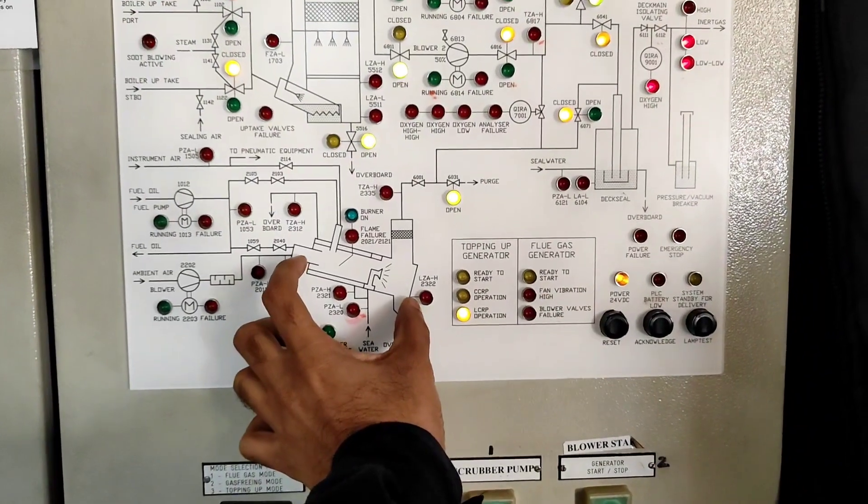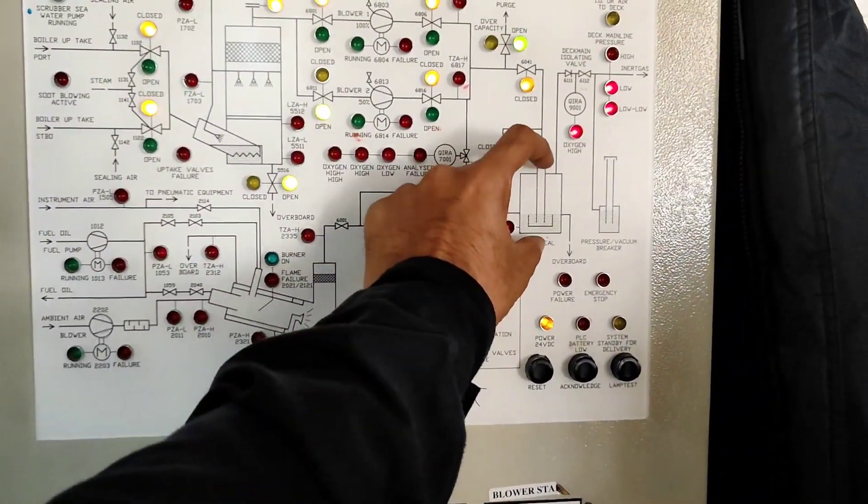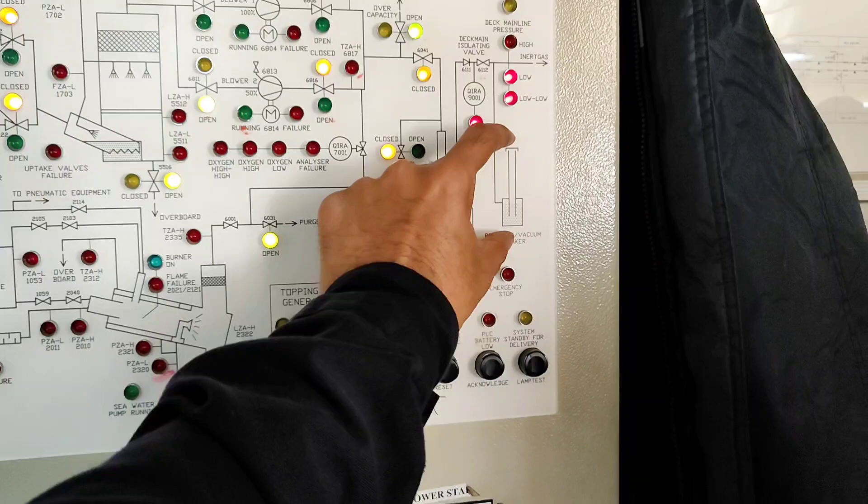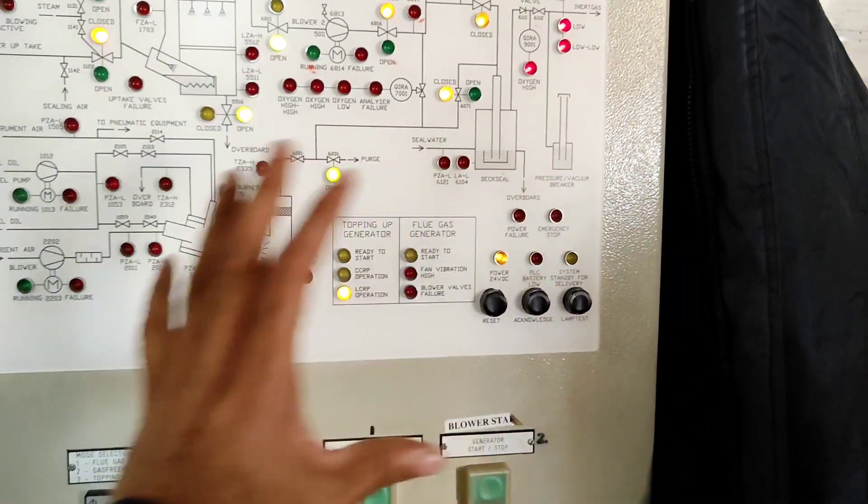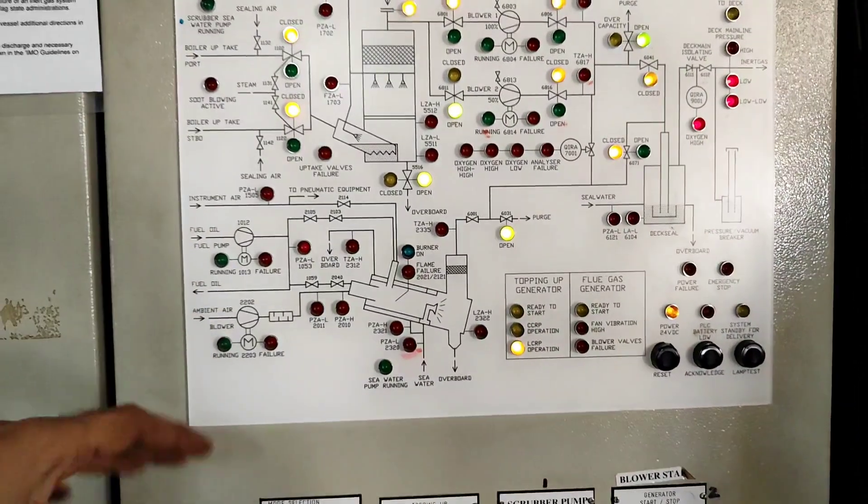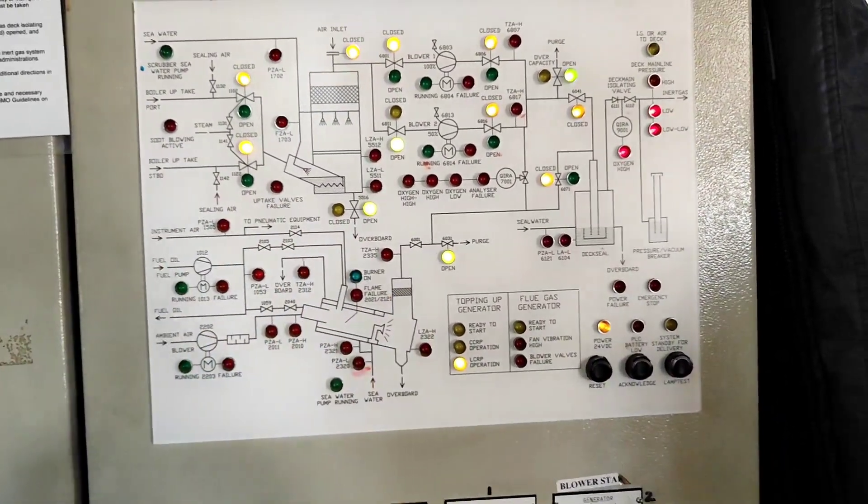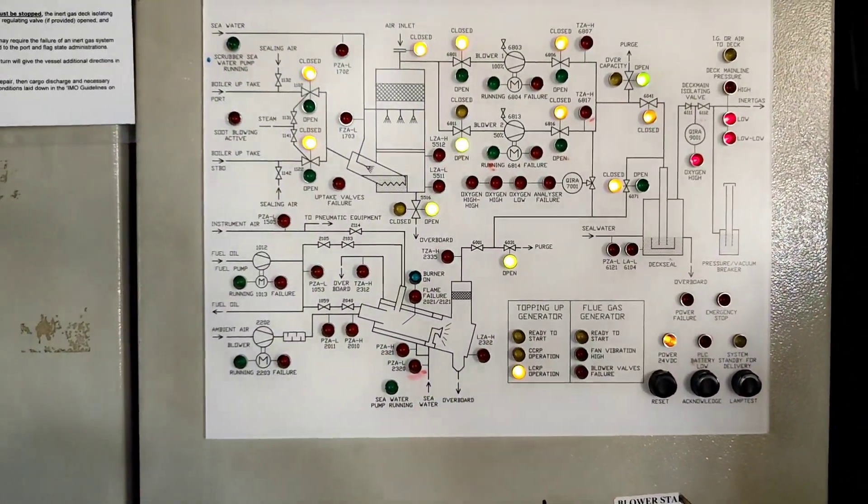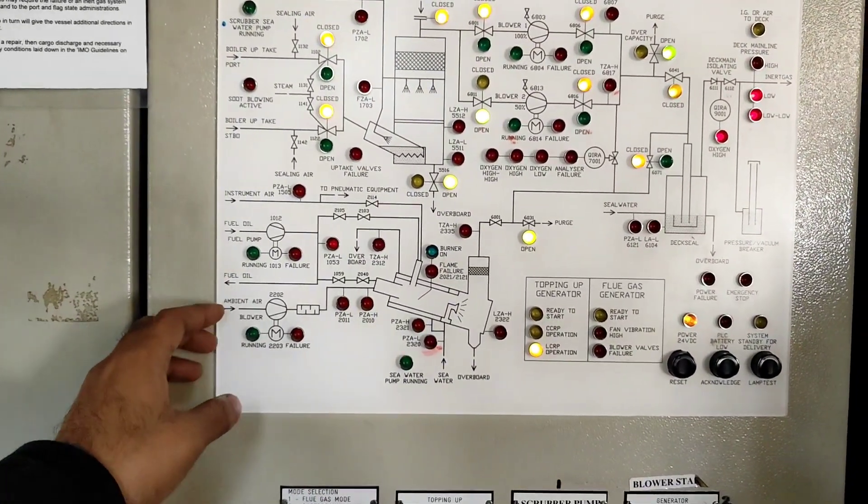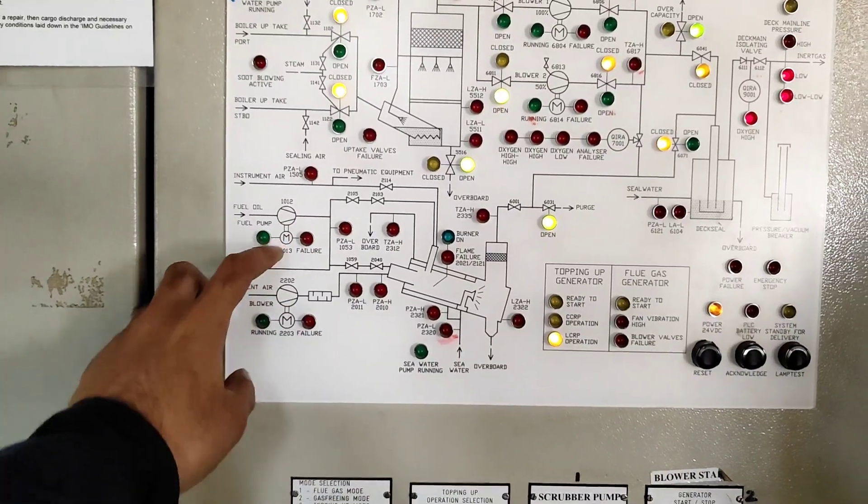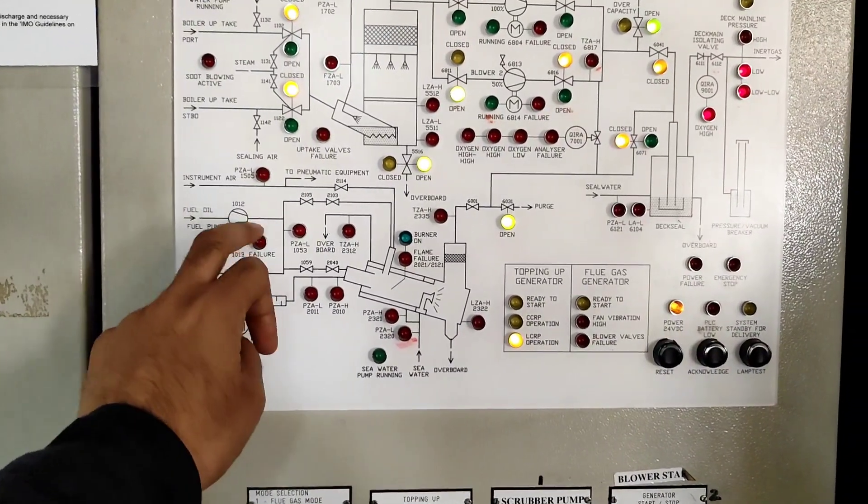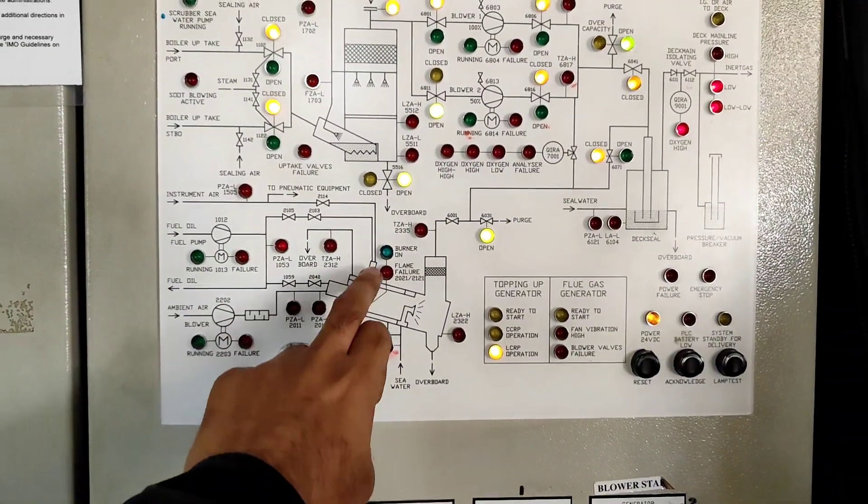So this unit is your scrubber and this is for topping up IGG. This is your deck seal and this is your PV breaker. So one, two, three, four - four important things are there. Other things are also important but I was trying to highlight the main points. These are the fuel oil pumps, two, and you can see the line which is connected to IGG.